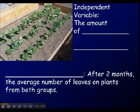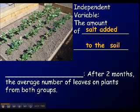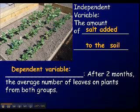In our experiment, the independent variable — think about it — it's the amount of salt added to the soil. Now, what would it be called if, after two months, you count the average number of leaves on the plants from both groups? You're counting the number of leaves — it's not the independent variable. It's the dependent variable, because the dependent variable depends on the independent variable.